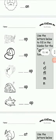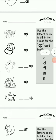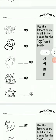Then use the letters below to fill in the blank for -ap word family. This is the -ap word family. Pictures are given. First picture is map, then cap, then clap, then nap, then flap.